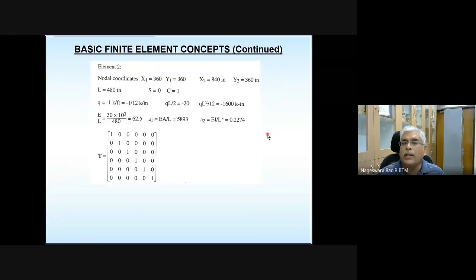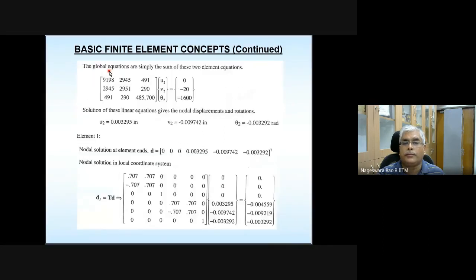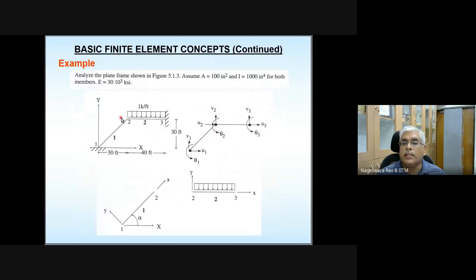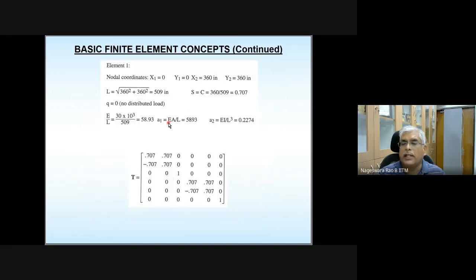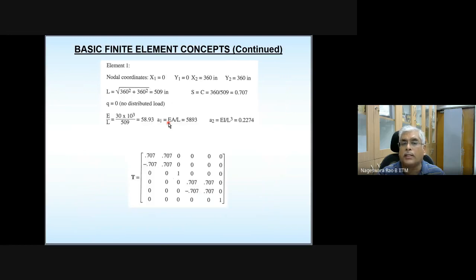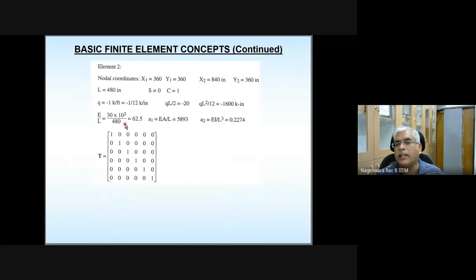There is no load on element 1, so the local and global force vectors are zero. For element 2, this is taken as local node 1 and the other end as local node 2 — which is somewhat different from the recommended approach of consistently making the common node either node 1 or node 2. Because of this inconsistency, we need to assemble the full global stiffness matrix and then obtain the reduced stiffness matrix.